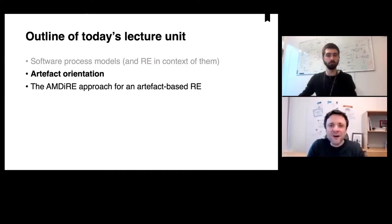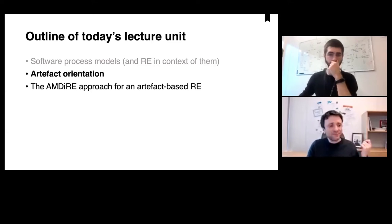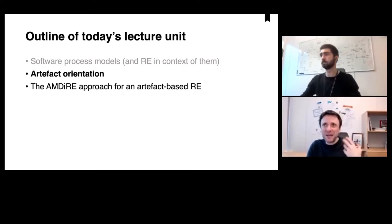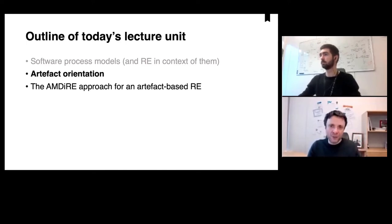One way to accommodate this and close the gap is by using an artifact-based requirements engineering approach that makes this practical, tacit knowledge more explicit. This brings us to the second part of today. Let's start talking about artifact orientation. In principle, if trying to paint a black-and-white picture about reality, I have two basic philosophies to define my software process model.